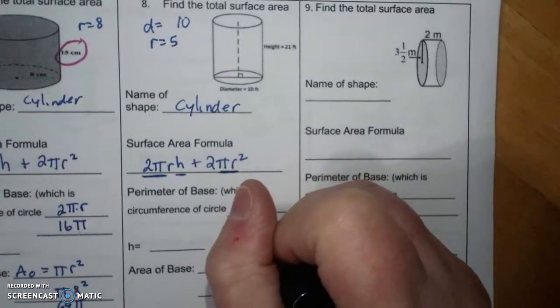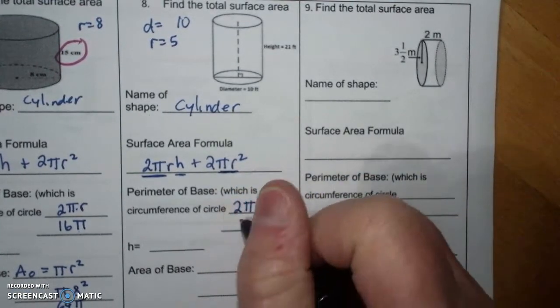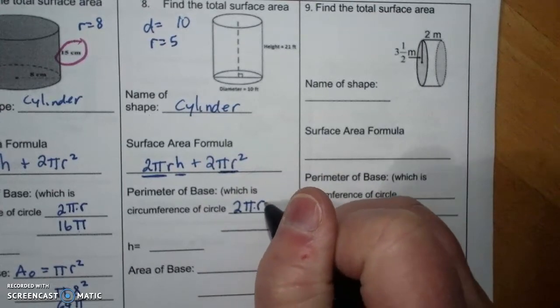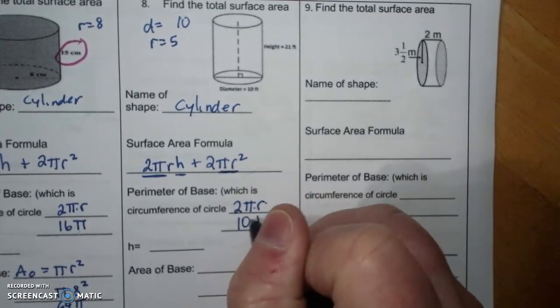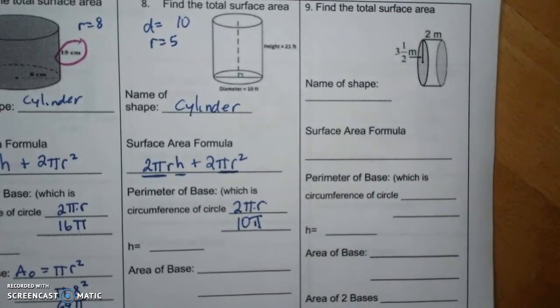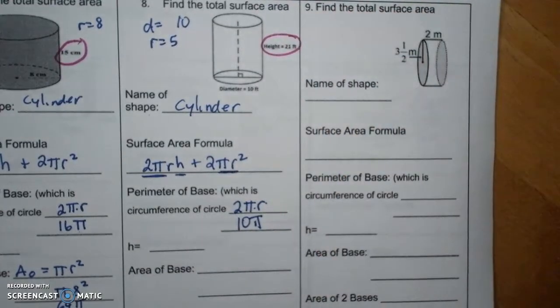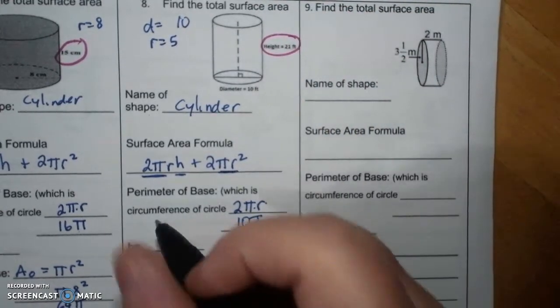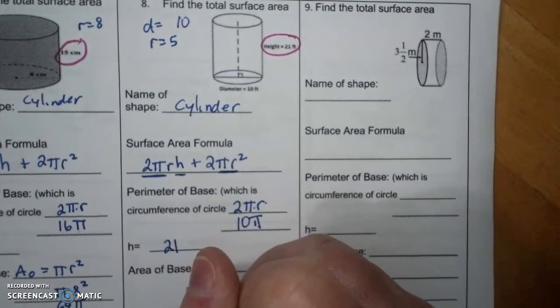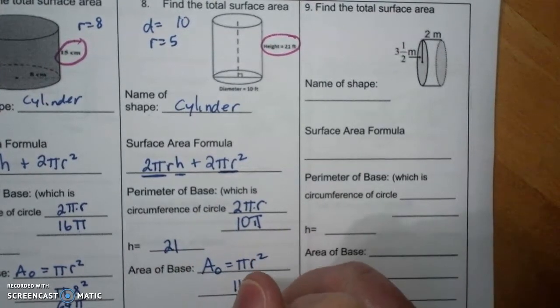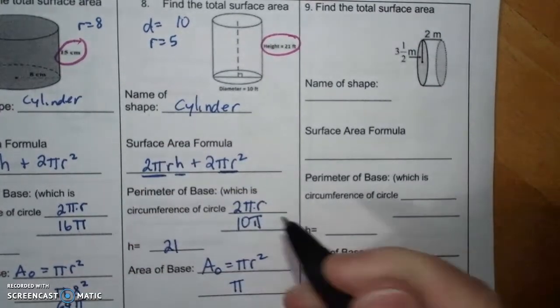Circumference is 2πr which is 2 times π times 5 which is 10π. h is the distance between the two circles which is 21. Area of a circle is πr squared, π times 5 squared.